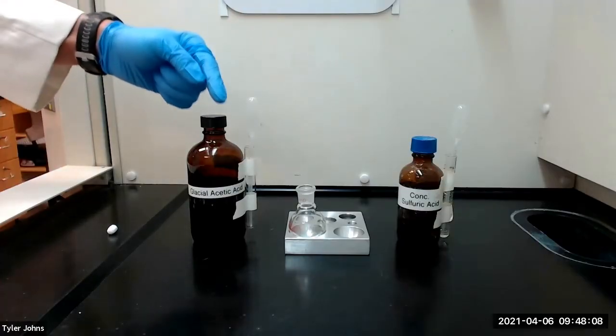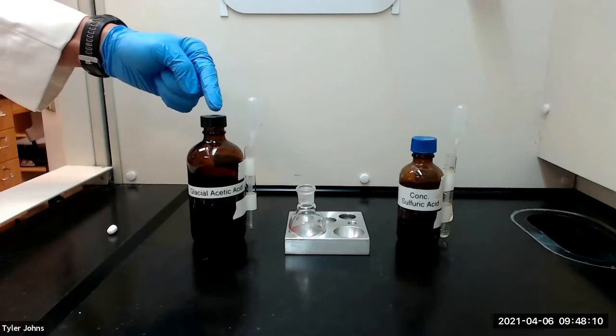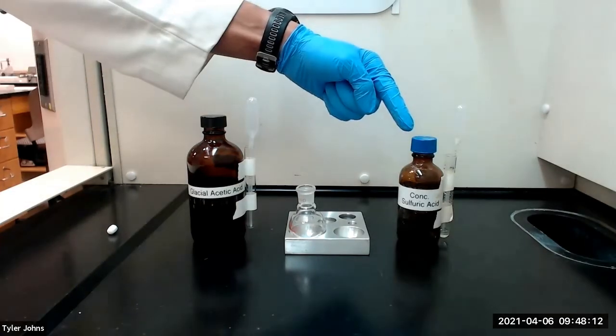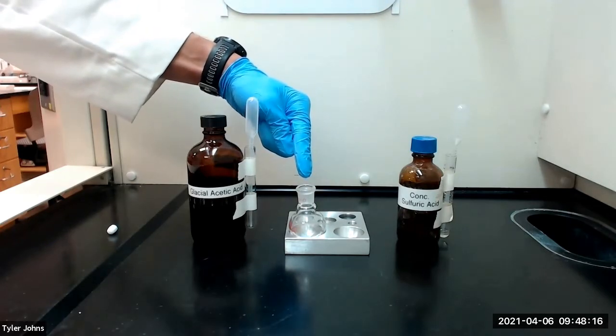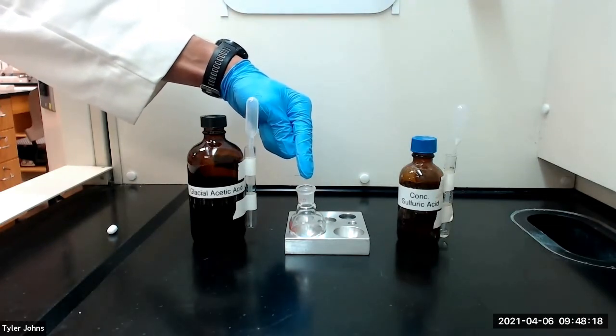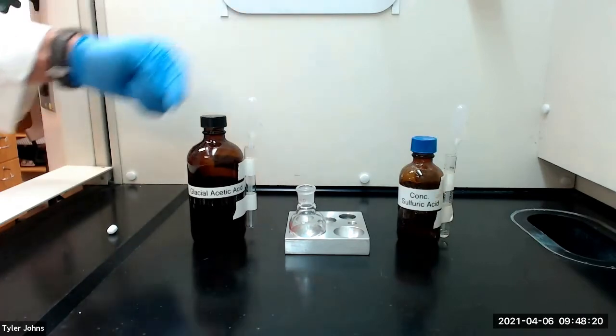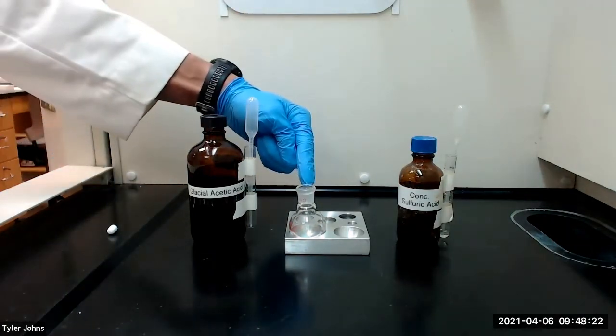We will next add 7 milliliters of glacial acetic acid and 1 milliliter of concentrated sulfuric acid to the unknown alcohol in the round bottom flask and swirl immediately to mix. We will also add a stir bar to the flask.